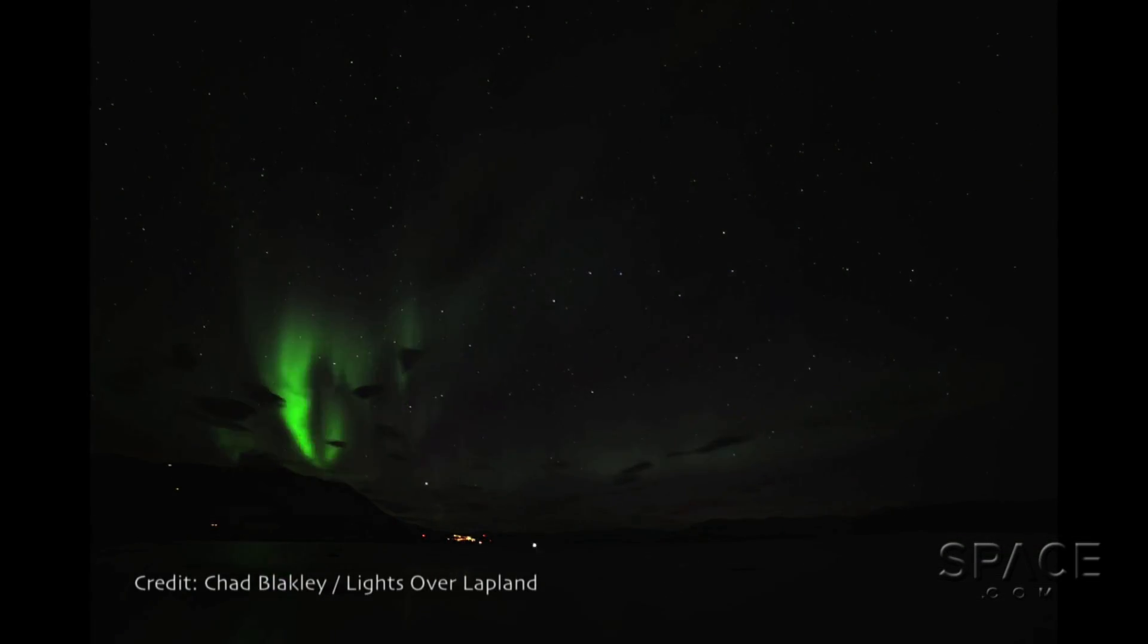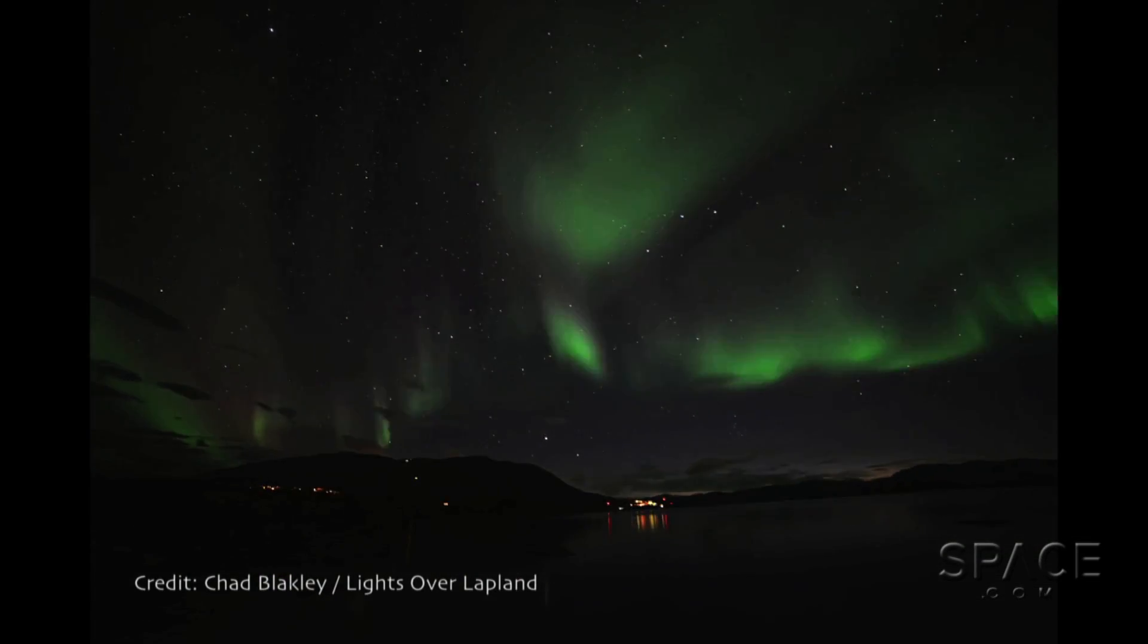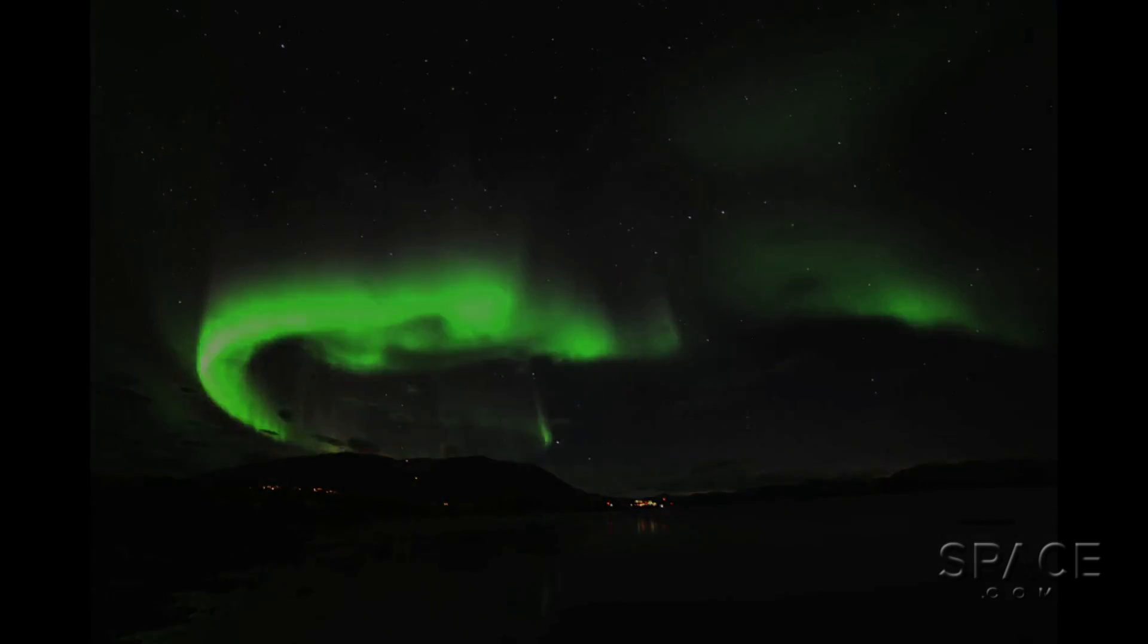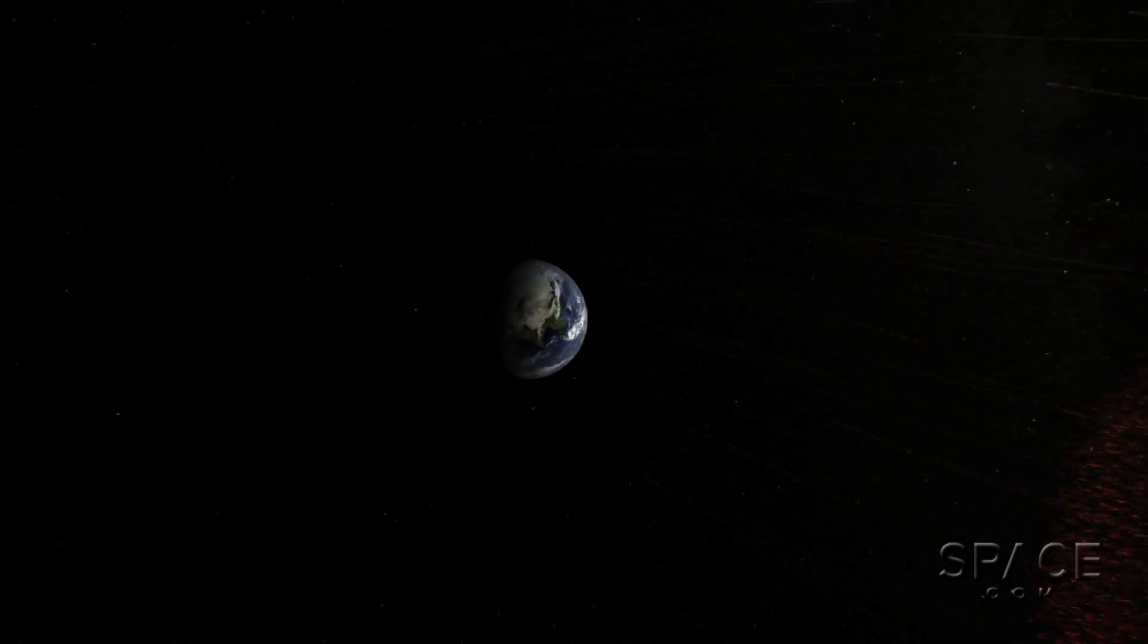Just because the Sun isn't kicking up a fuss doesn't mean we won't get colorful auroras or see our satellites get hit with geomagnetic storms. The solar wind is still flowing and can disturb the state of Earth's magnetic field.